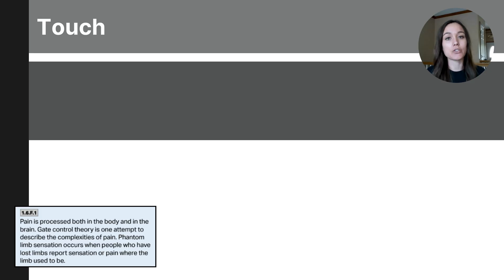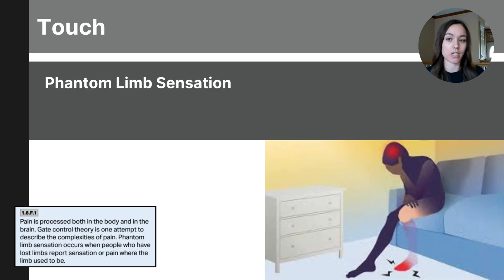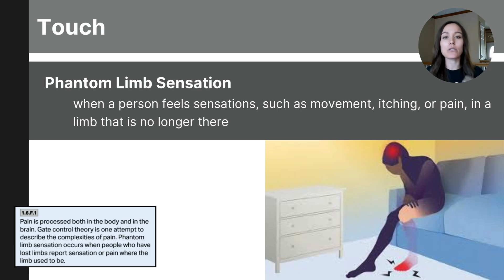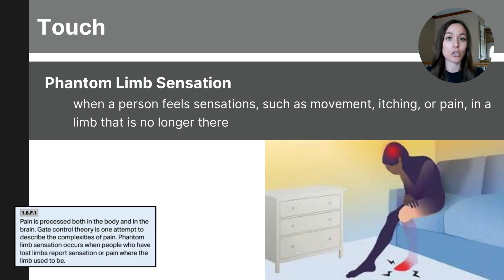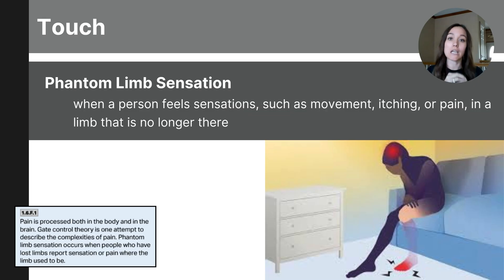One more concept related to pain is the phantom limb sensation — a fascinating example of how touch perception can continue even after a limb has been amputated. Individuals who lose a limb may still feel sensations, including pain, from that missing limb. This is because the brain's sensory and motor areas mapped for that limb remain active. The primary somatosensory cortex in the parietal lobe retains a map of the lost limb, which can lead to sensations of touch, temperature, or even pain despite the limb's absence. This demonstrates the complex interplay between sensory perception and neural plasticity.